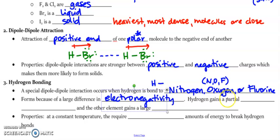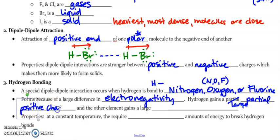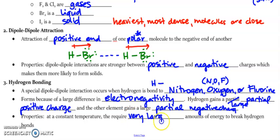Hydrogen gains a large partial positive charge, and the other element — nitrogen, oxygen, or fluorine — gains a large partial negative charge. A property of hydrogen bonding is that at a constant temperature, these require very large amounts of energy to break. So it's going to take a lot of energy to change their phase or state — like going from a solid to a liquid.